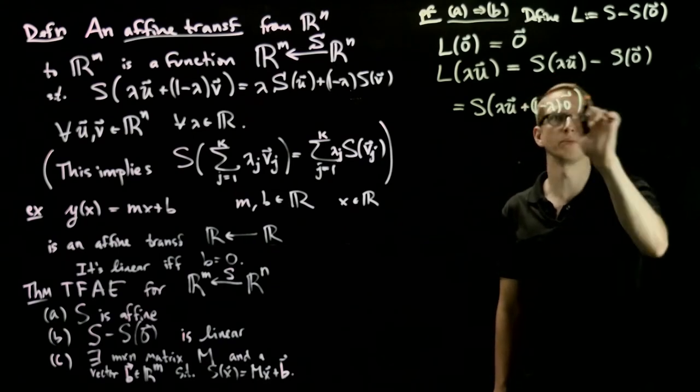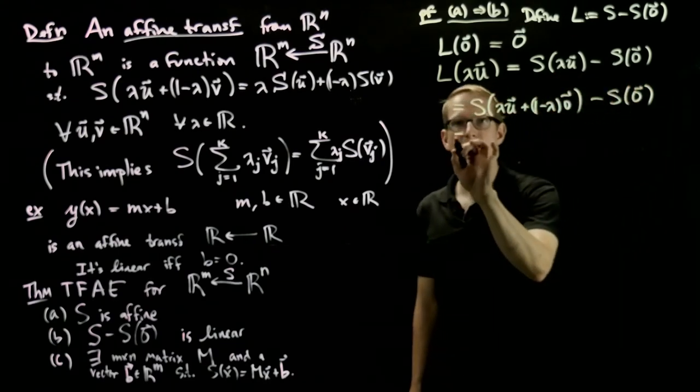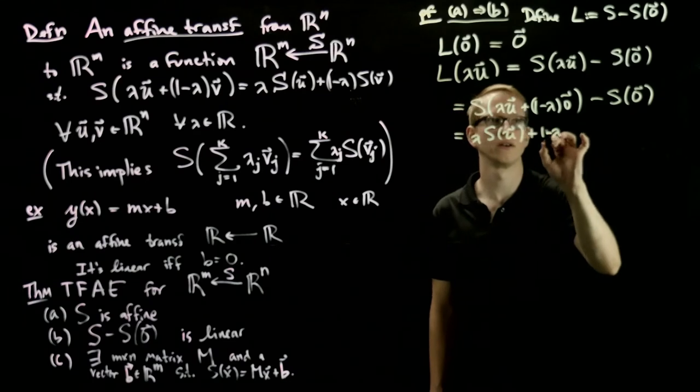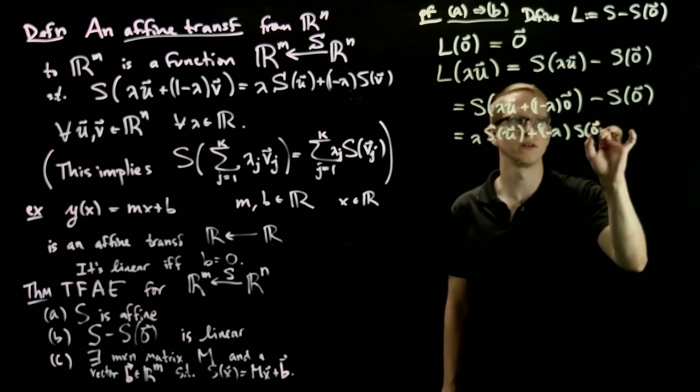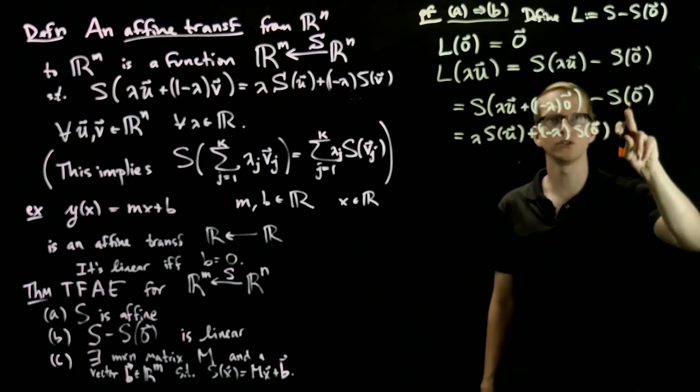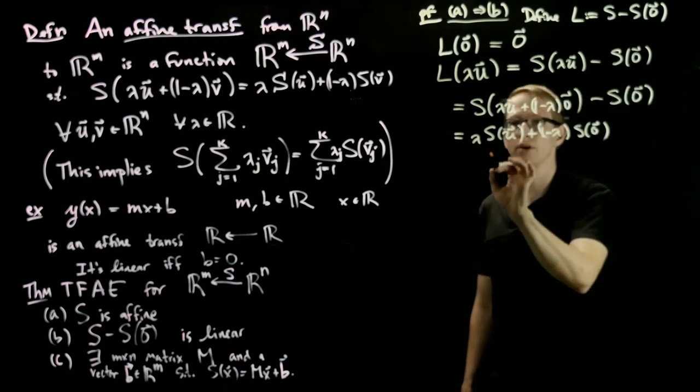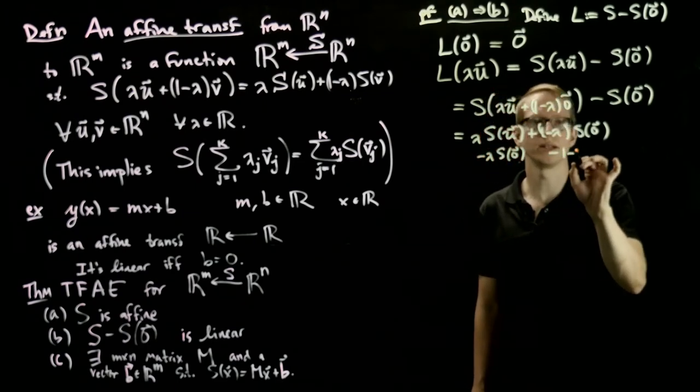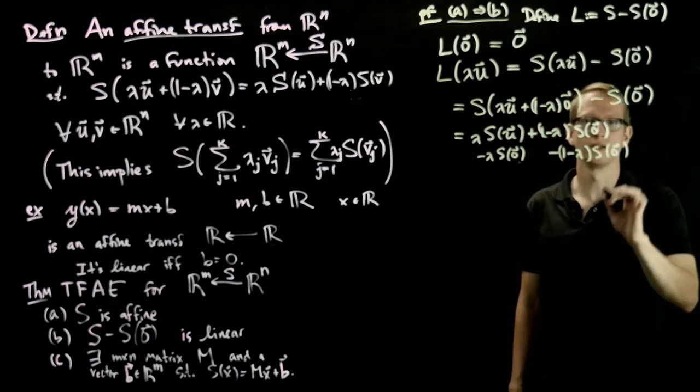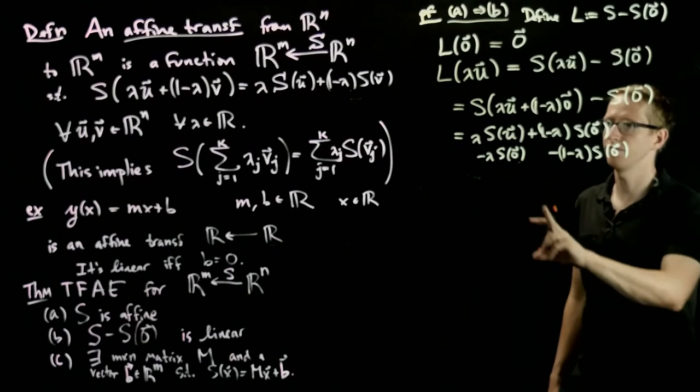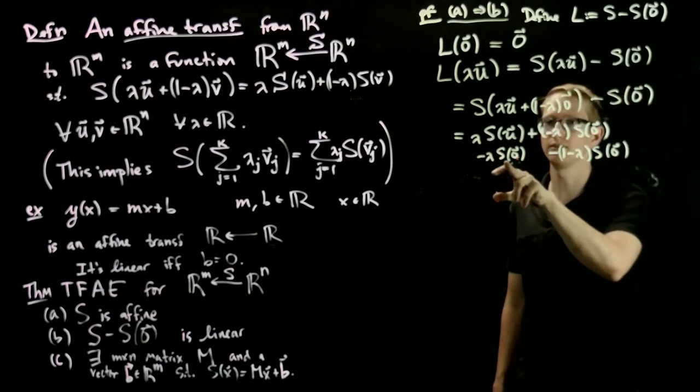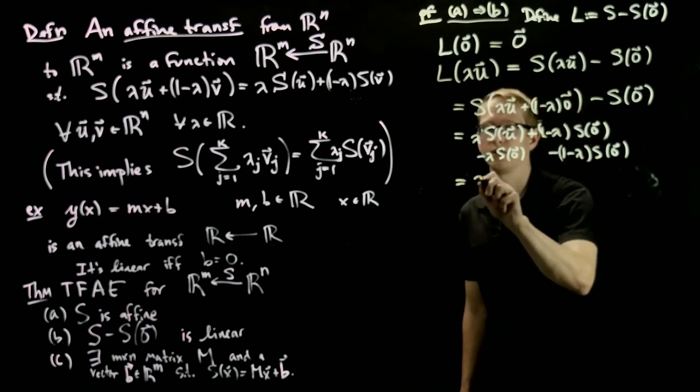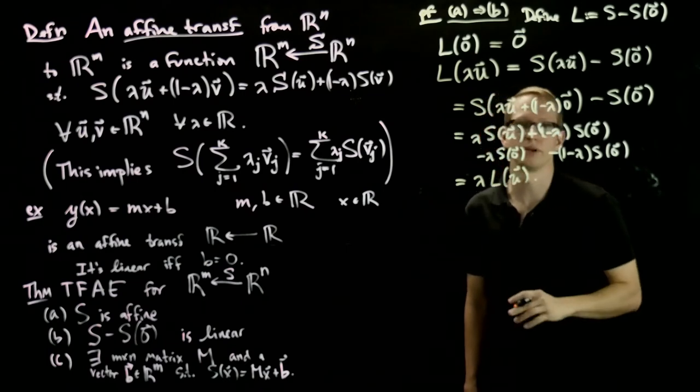Now the interesting thing is that this is an affine combination of the vectors u and 0. And because s is affine, I can take these coefficients out. So we have λ(s(u) - s(0)), which is exactly λL(u). And these two terms cancel. So we're left over with λL(u) when we're done with this calculation.